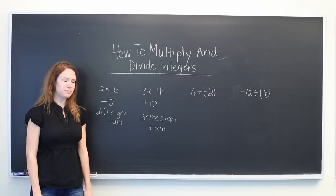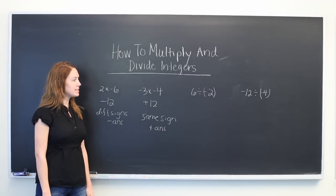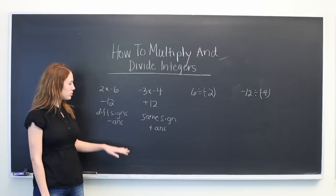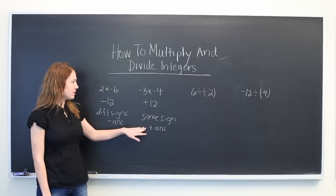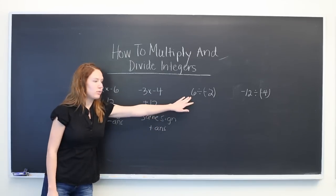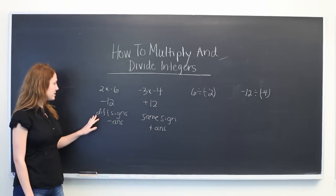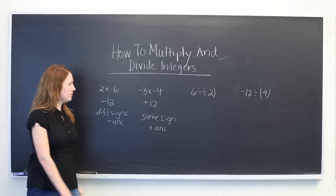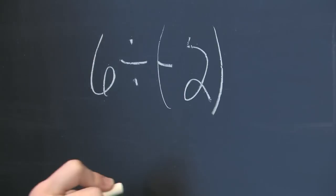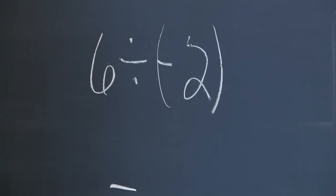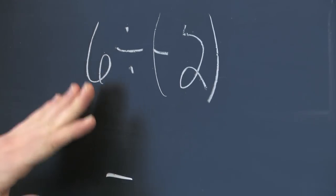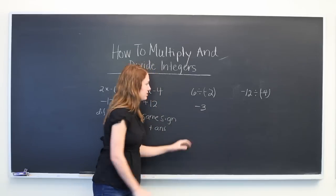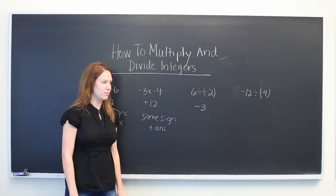Now on to division: 6 divided by minus 2. The same sort of rules apply. So we have one negative sign and one positive, so our answer will be negative. And we just say 6 divided by 2, which will be 3. So minus 3.